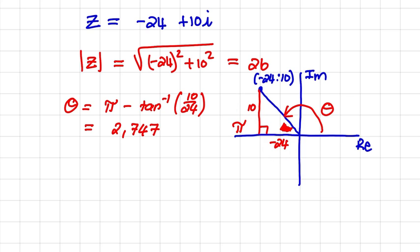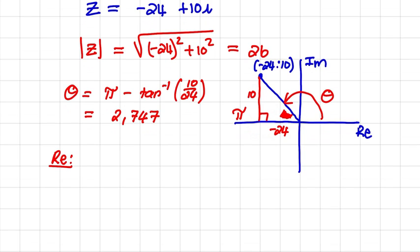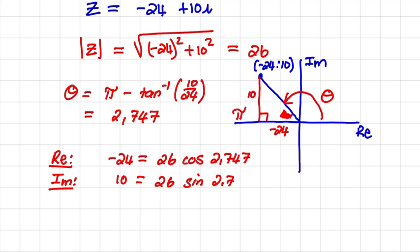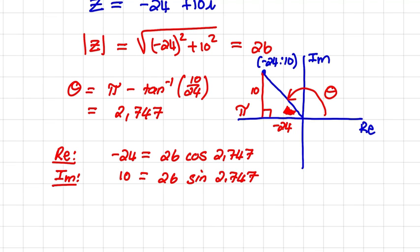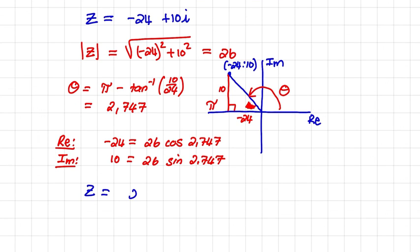Now we need to rewrite the real value and the imaginary value in terms of trigonometric ratios. The real value negative 24 equals 26 times cos of 2.747, and the imaginary value 10 equals 26 times sine of 2.747. So that means I can rewrite z as 26 cos 2.747 plus i times 26 sine of 2.747.